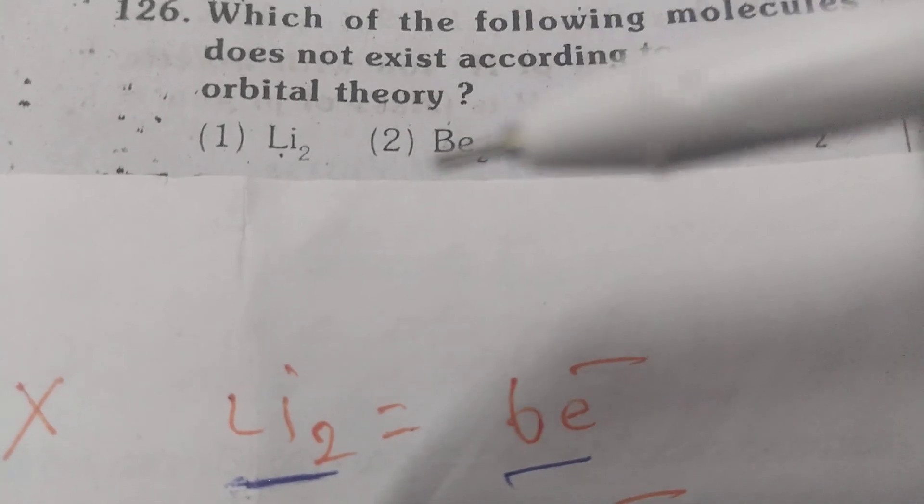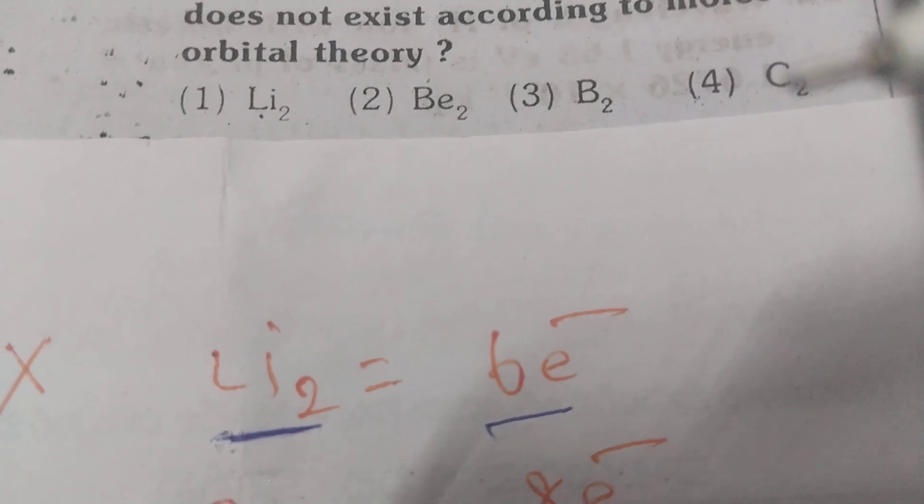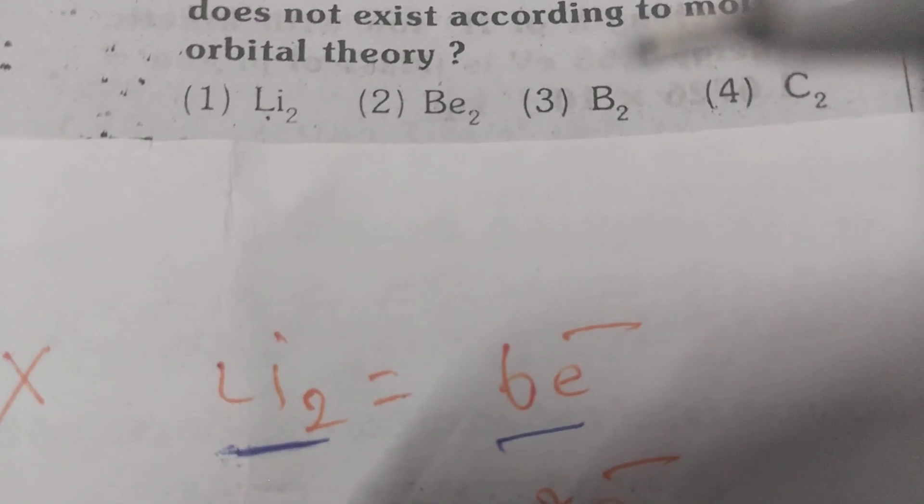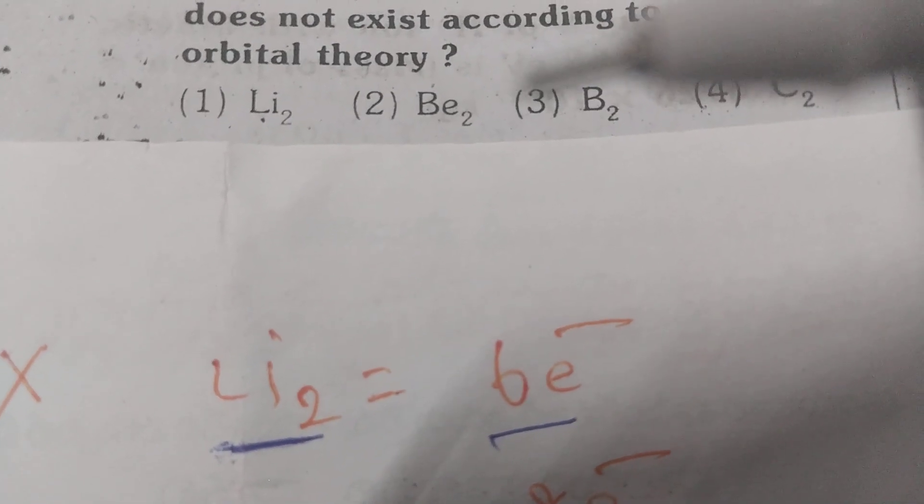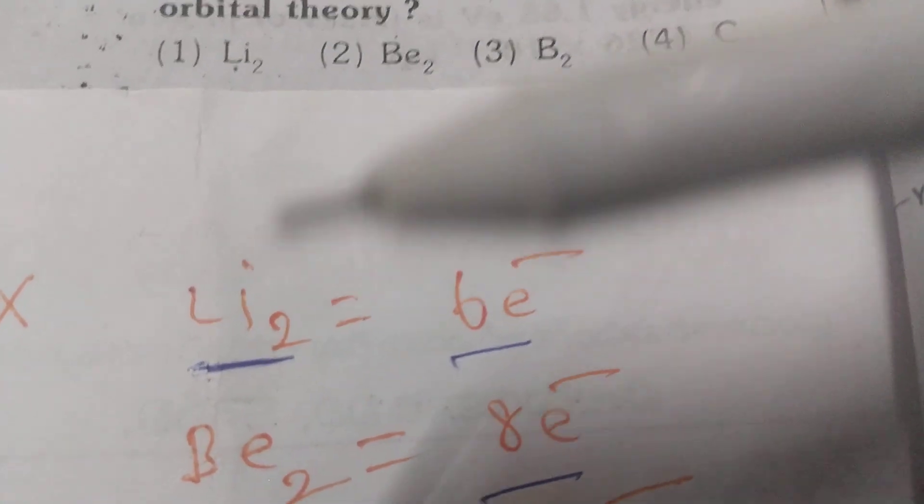You see Lithium-2, Beryllium-2, B2, C2. First of all, you are expected to know how many electrons are present in Li-2, that is Lithium atomic number 3.